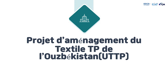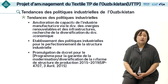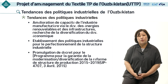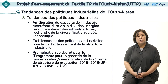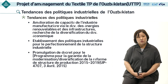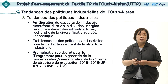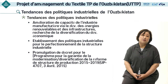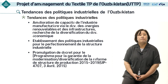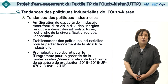Ensuite, je vais vous présenter le deuxième projet, celui de l'aménagement du Textile Technoparc de l'Ouzbékistan. L'Ouzbékistan recherche divers changements pour améliorer les capacités de fabrication et le développement économique grâce au développement d'énergies nouvelles et renouvelables. Elles mettent en place des politiques industrielles pour faire progresser la structure industrielle. De 2015 à 2018, le gouvernement a promulgué un programme pour assurer la modernisation et la diversification de la réforme des structures de production par un décret présidentiel.